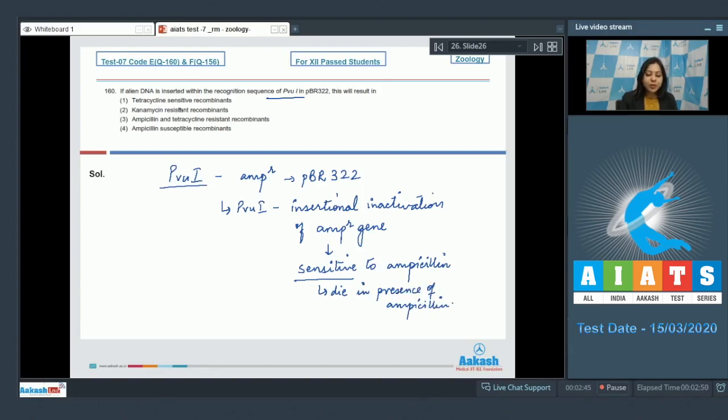Let us see the options. Tetracycline sensitive recombinants, this is incorrect as the gene for tetracycline resistance has not been inactivated. Number two, kanamycin resistant recombinants, this is also incorrect as kanamycin resistance has not been invaded. Number three, ampicillin and tetracycline resistant recombinants, this is also incorrect as resistance to ampicillin is lost.